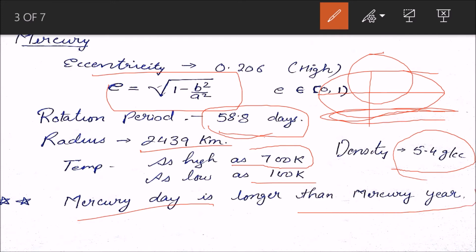Now, this is an interesting fact: a Mercury day is longer than a Mercury year. The first question I'm putting to you is, can you explain why there is such a high temperature difference in Mercury? It has something to do with this point. Please mention in the comments if you have figured it out.